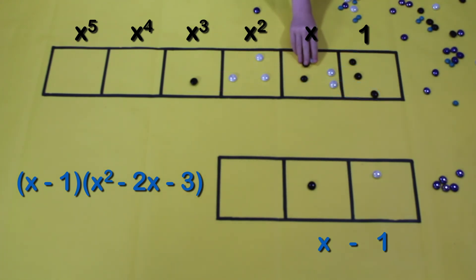So a dot and an anti-dot disappeared, and we have the case again. They disappear. And here we have our answer: x minus 1 times x squared minus 2x minus 3 equals x cubed minus 3x squared minus x plus 3.